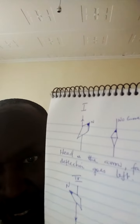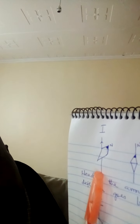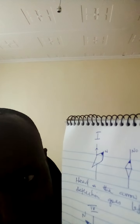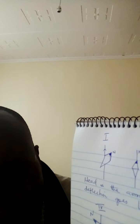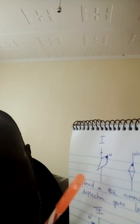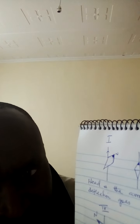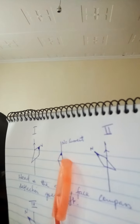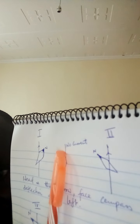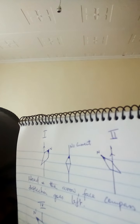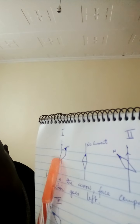Let us look at some diagrams and see what happens. In diagram number one, there is an arrow showing current is flowing in that direction, and the compass has deflected — it is not pointing vertically up. You can see there is a difference. It has gone to one side. I want you to get the difference between diagram one and diagram two.